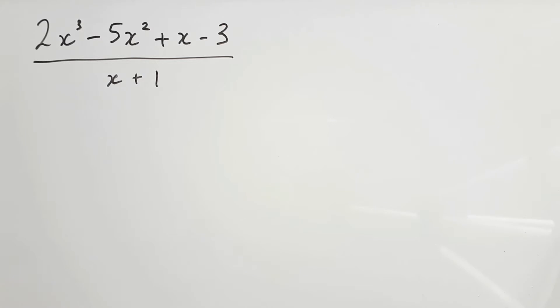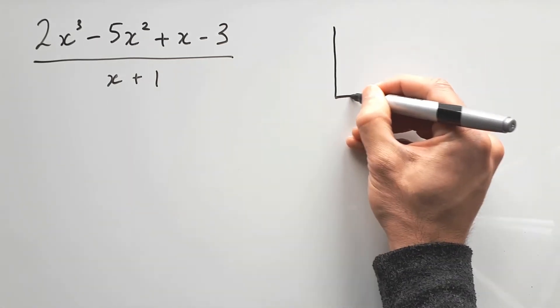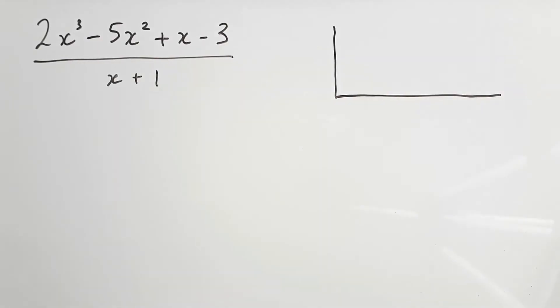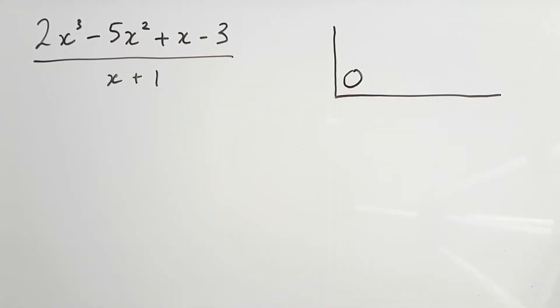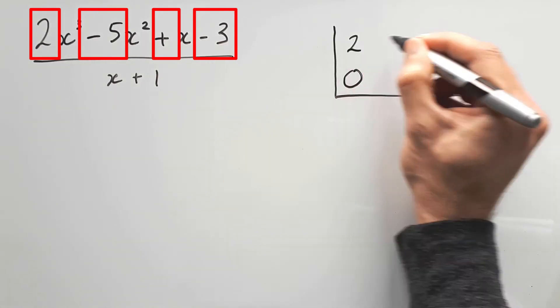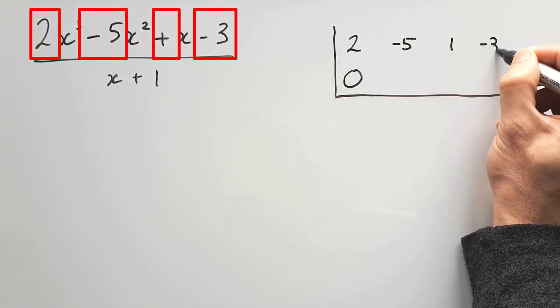So to start you off, the first thing you do is draw an upside down division bracket. Make sure it's deep enough to fit two rows of numbers. Now put a zero in the corner. In every question, this will always be a zero. Next, pluck out the coefficients from the cubic and write them in the top row as 2, negative 5, 1, and negative 3.